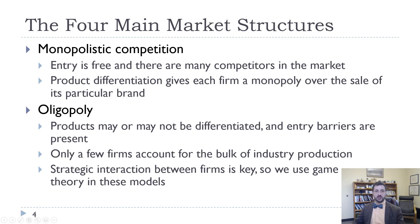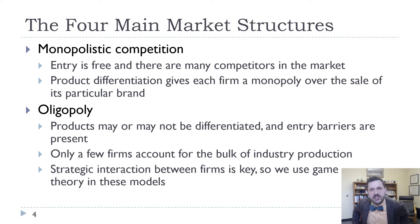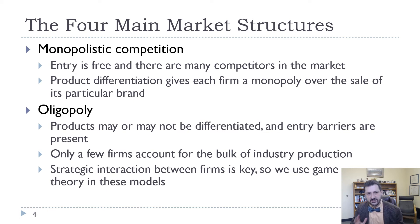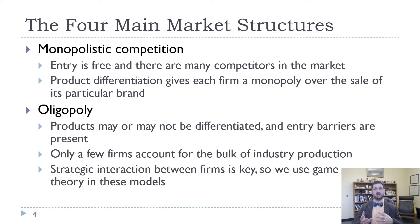Monopolistic competition is a little bit of monopoly and a little bit of perfect competition. Entry is free and there are many competitors — like perfect competition — but there is product differentiation, which gives each firm a monopoly over the sale of its particular brand. Whether that's a good thing depends on whether the increase in variety compensates for the higher prices consumers pay. Oligopoly can have products that may or may not be differentiated. There will be some entry barriers — maybe only so many firms can operate profitably, or there are legal or market barriers — and a few firms account for the bulk of industry production.